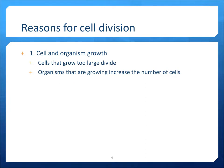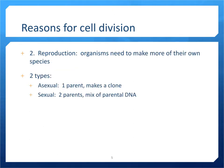In addition to becoming large, cells can also divide because the organism they are part of needs to grow in size. In order to grow, people, for example, need to increase the number of cells in their body. Cells can also divide in order for an organism to reproduce. Reproduction is organisms making more of their own kind or species in order to keep the species from going extinct.